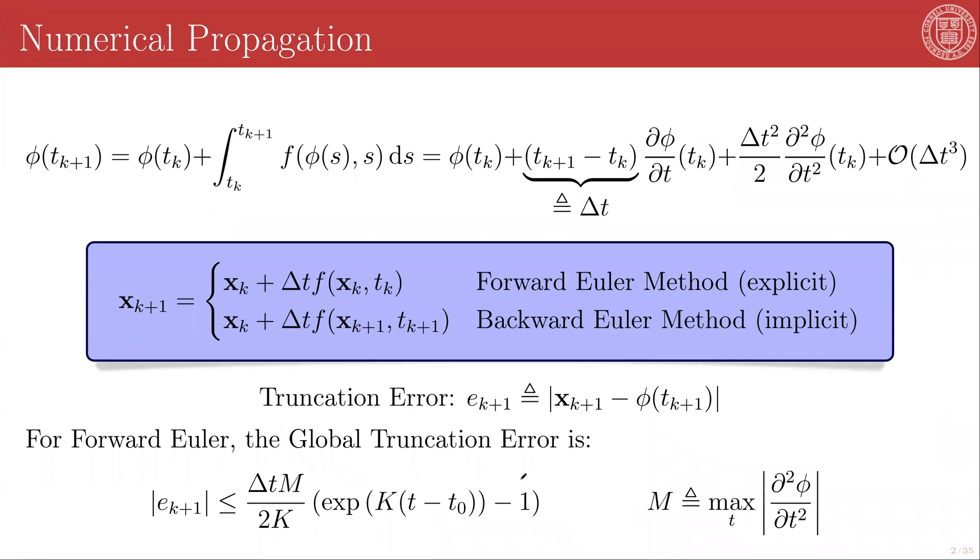And from this we can also define a global truncation error, which is that |eₖ₊₁| ≤ Δt·M/(2K)·(exp(K(t - t₀)) - 1).